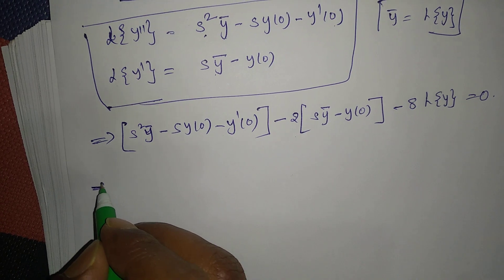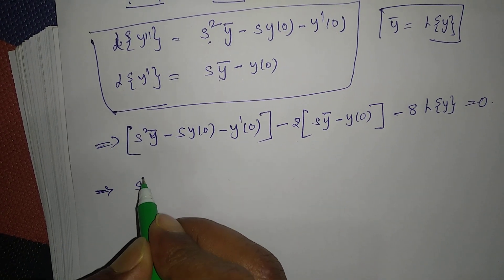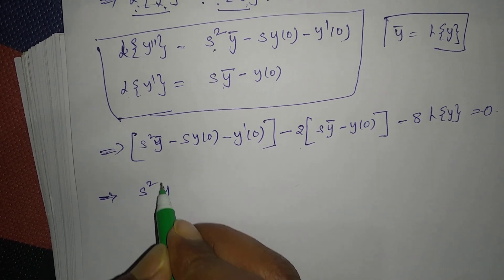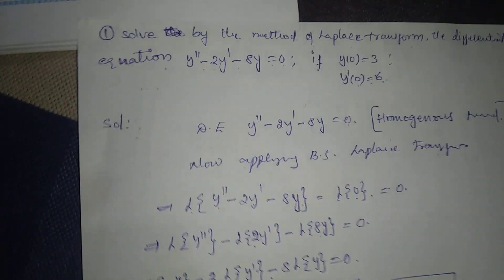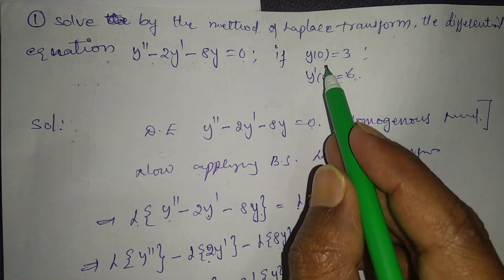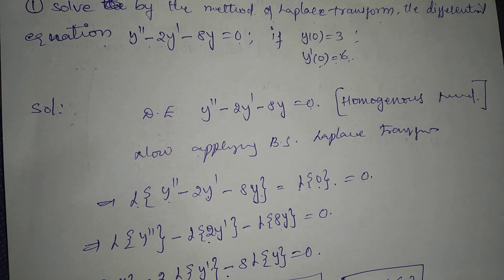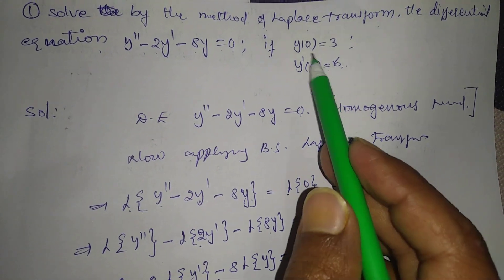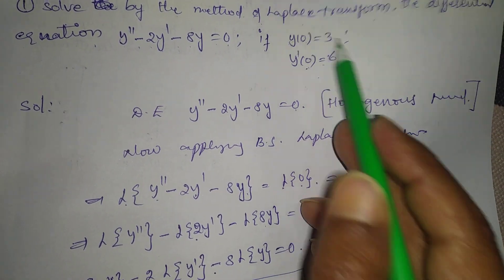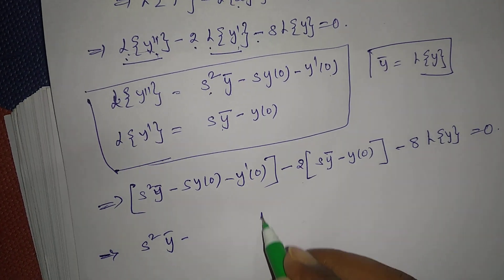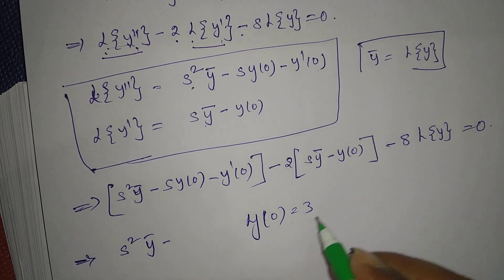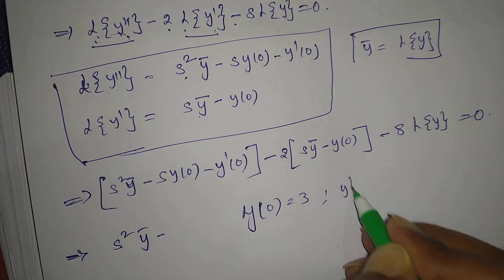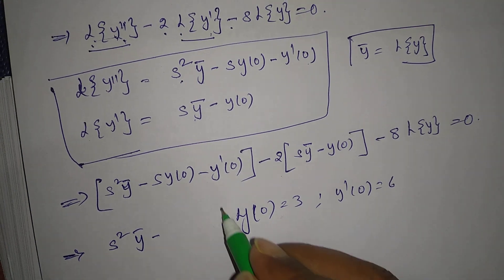These are the boundary value conditions. y(0) = 3 and y'(0) = 6. Write them down: y(0) = 3 and y'(0) = 6.